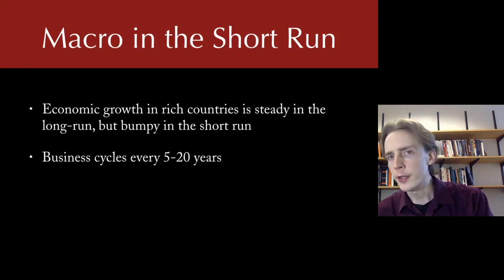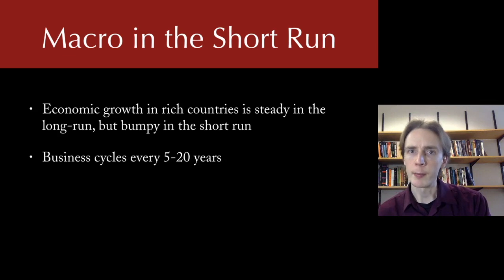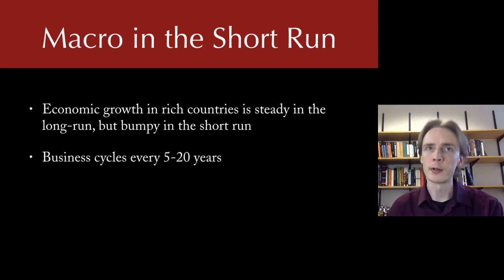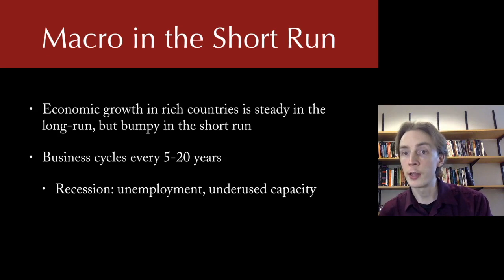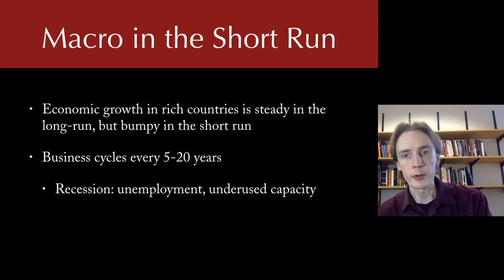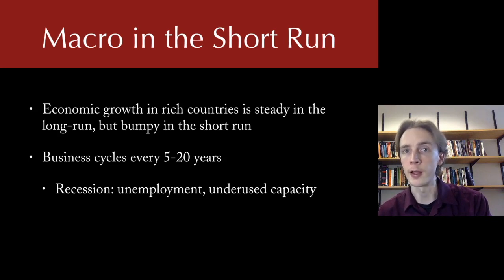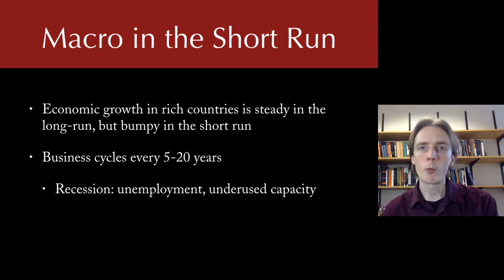We're going to call these business cycles. Business cycles happen about every 5 to 20 years, and they cycle between recessions and booms. Recessions are characterized by unemployment, by underemployment, by things that could be being used but aren't. What we're going to want to know is what prevents these resources from being used effectively.